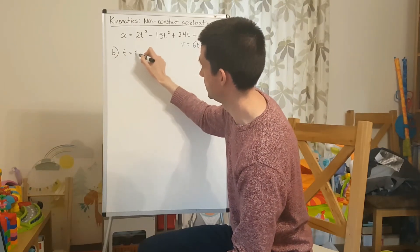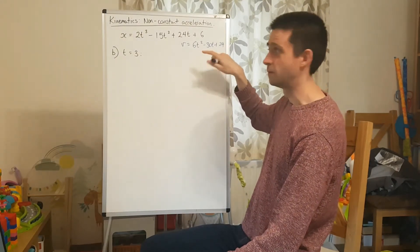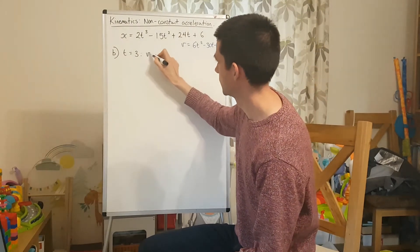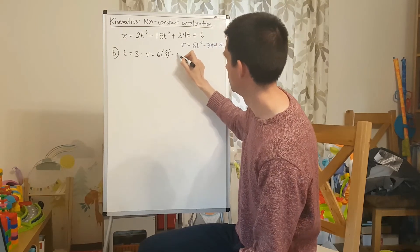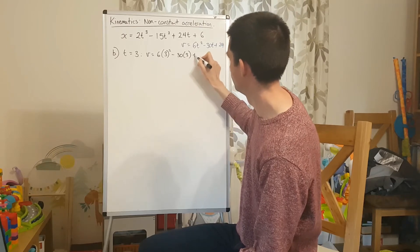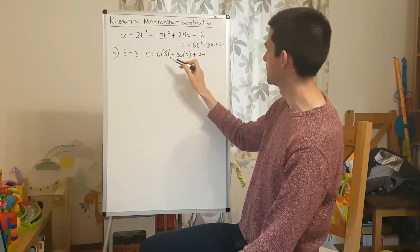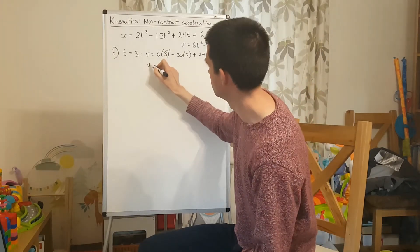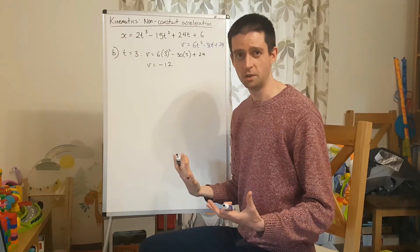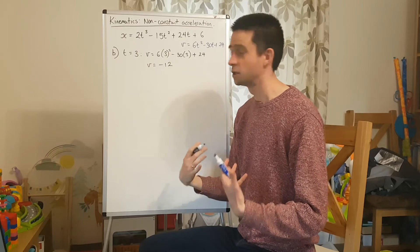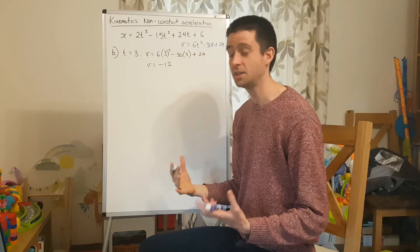To find the velocity when t equals 3, I simply substitute t equals 3 into my equation for velocity. So v equals 6 lots of 3 squared minus 30 lots of 3 plus 24, which gives negative 12. Referring to the question carefully is very important here — it asks for both the velocity and the speed, implying they might be two different things, and in this case they are.